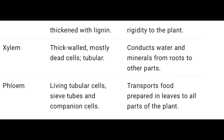Xylem and phloem are complex tissues. Xylem consists of mostly dead cells with thick walls; it conducts water and minerals from roots to other parts of the plant. Phloem is a living tubular cell with sieve tubes; it transports food prepared in the leaves to all parts of the plant.